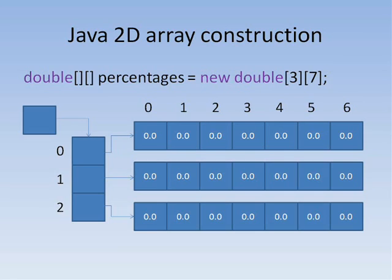Java automatically initializes each of the doubles to zero. Since Java arrays begin at zero, the elements of percentages are numbered from zero to two, and each row referred to is indexed from zero to six.